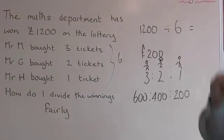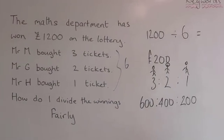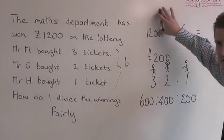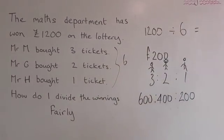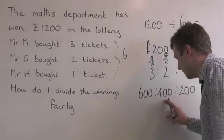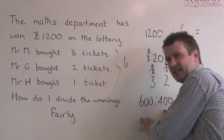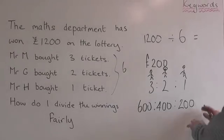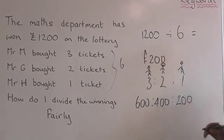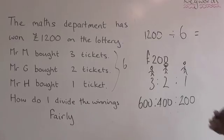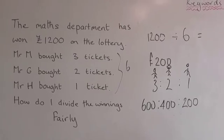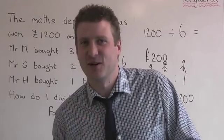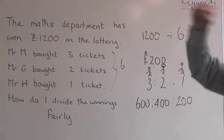Are we sure of these answers? How could we check ourselves to see if this is right? How much did we have to start with? Twelve hundred pounds. Let's add this up — six hundred and four hundred is one thousand. Two hundred gives me one thousand, two hundred. The maths department has won one thousand, two hundred pounds!